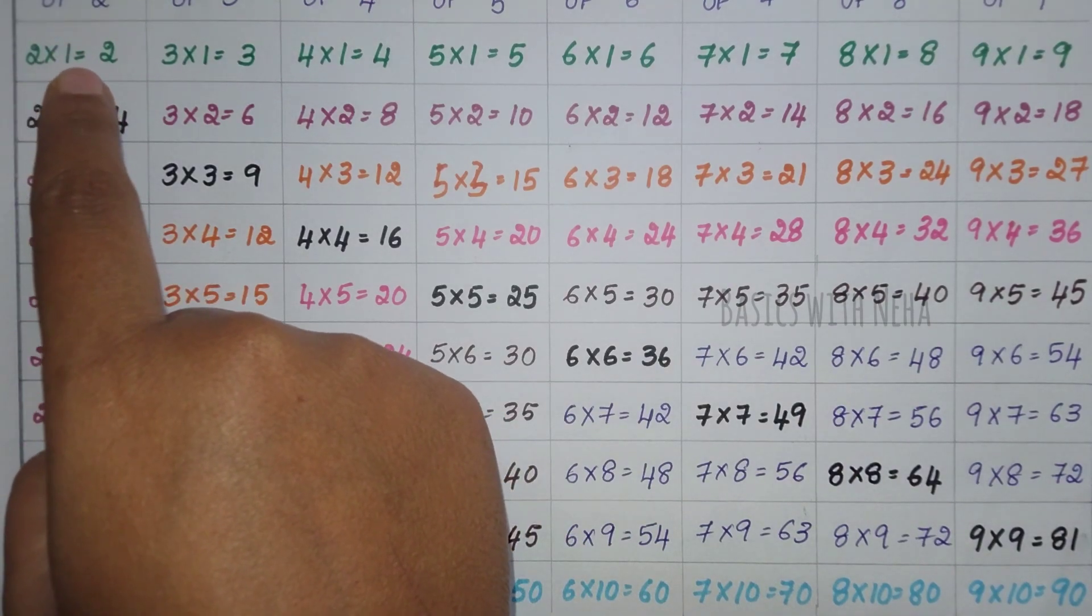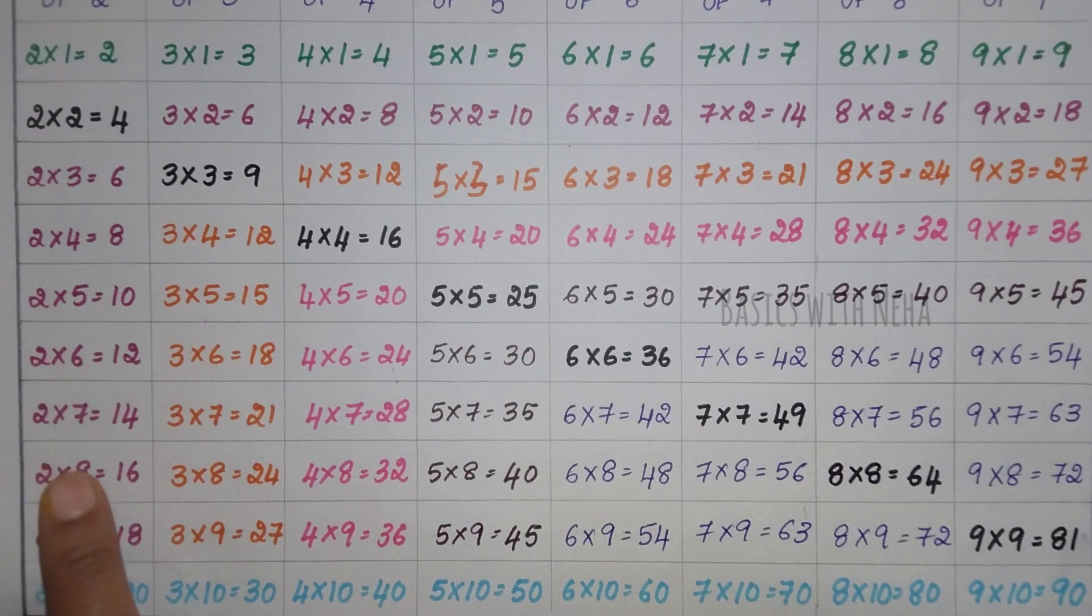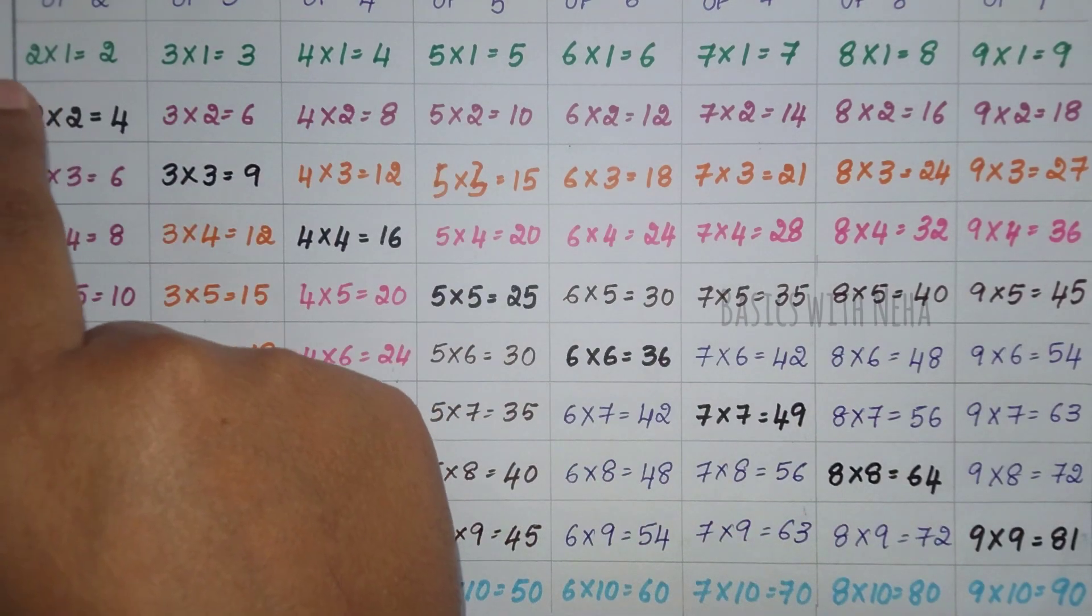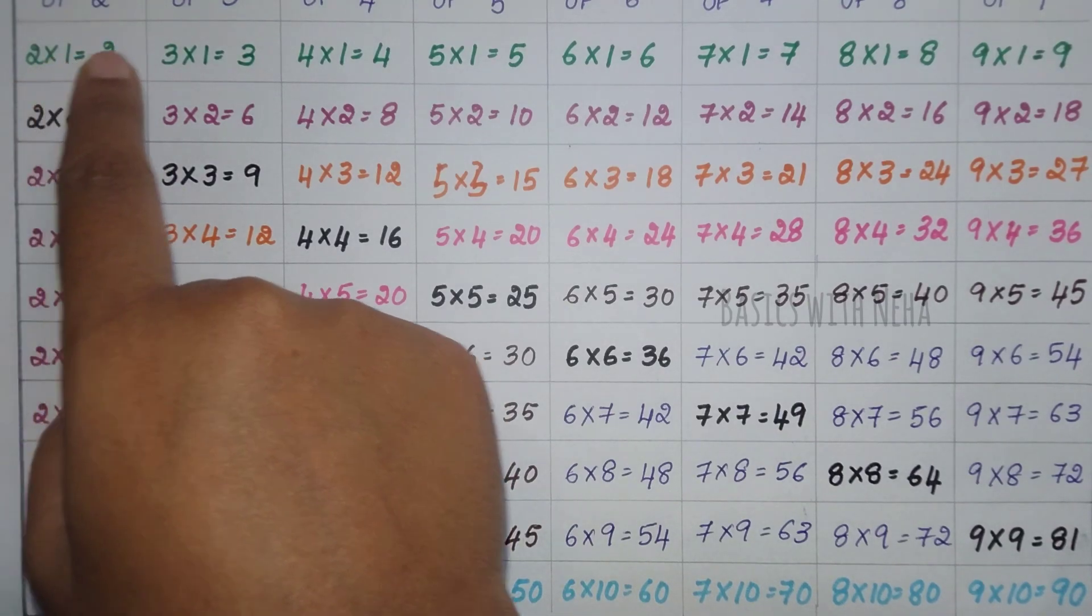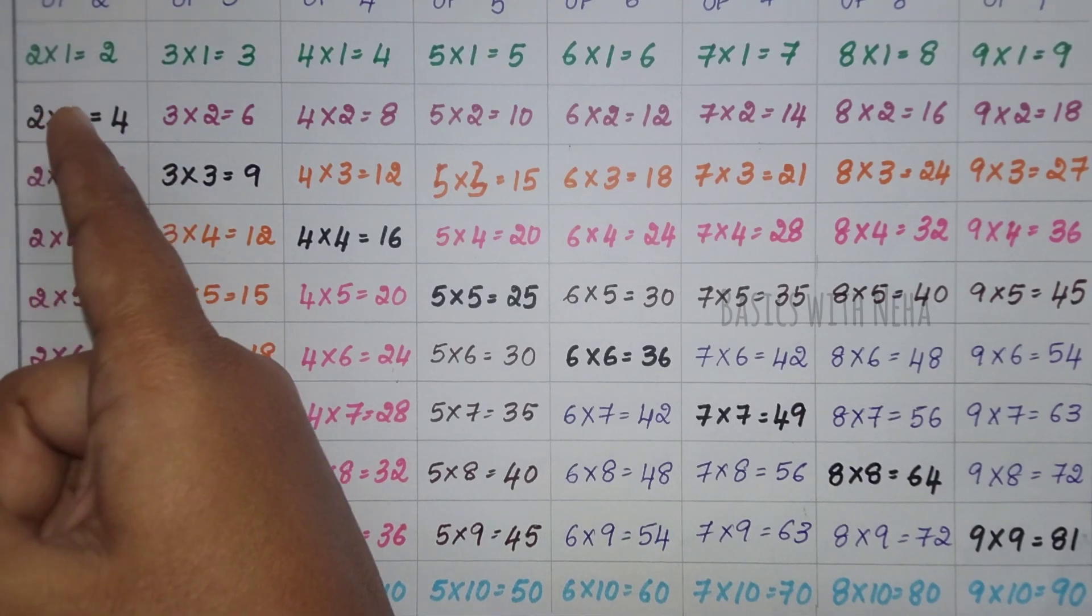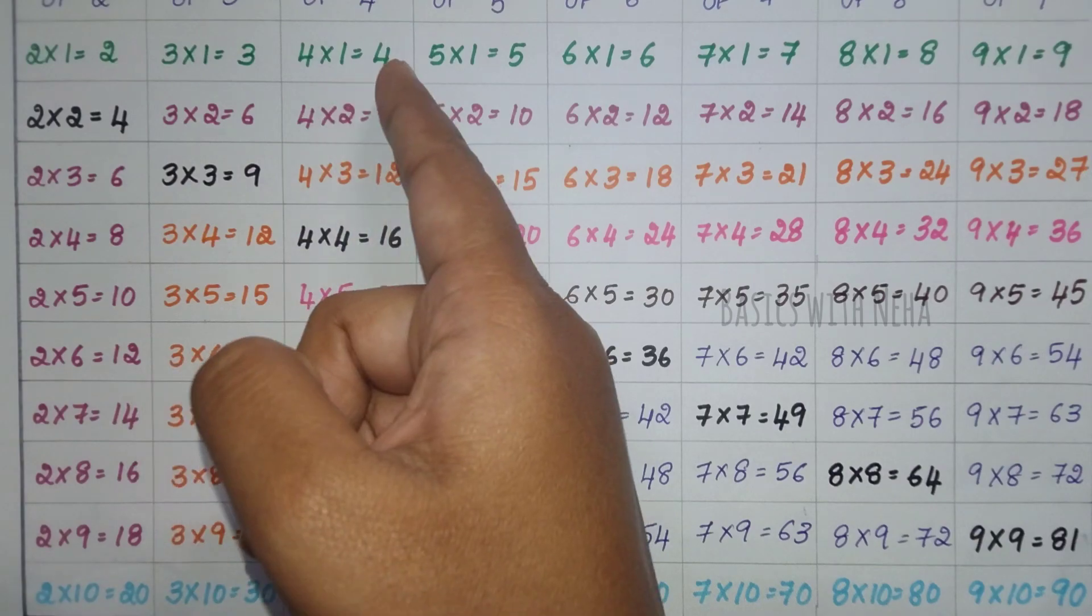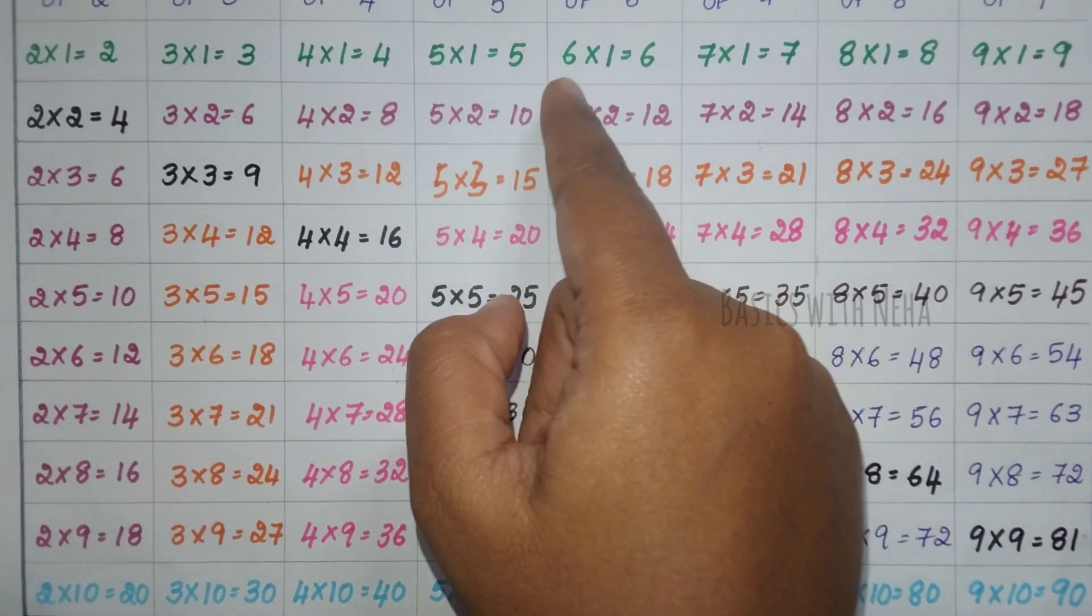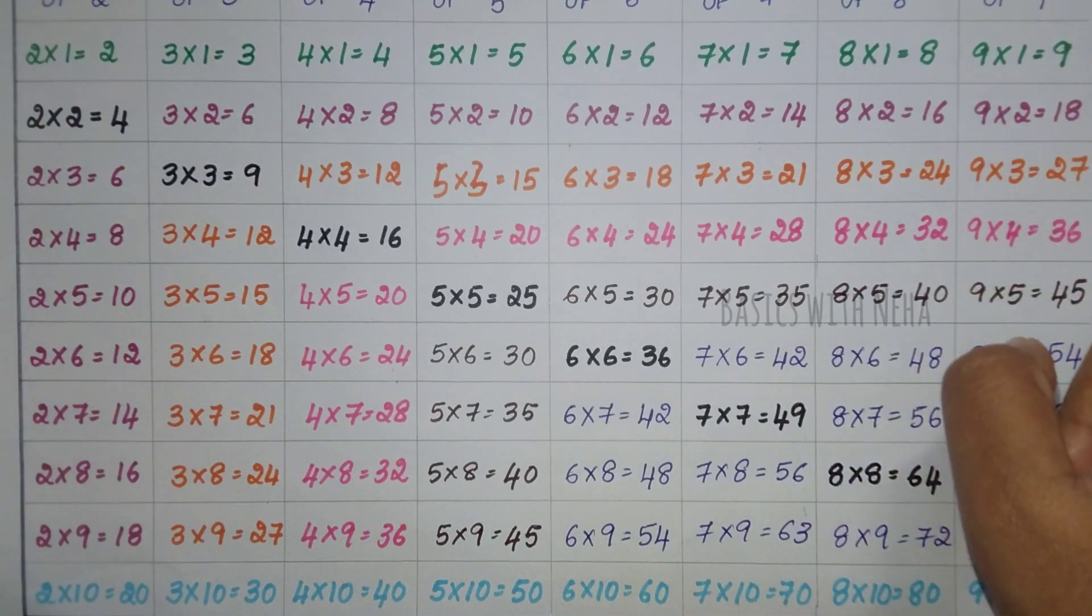That is 1×2 are 2, 1×3s are 3, 1×4s are 4, 1×5s are 5, 1×6s are 6. Likewise it goes up to 10×1s are 10, that is 1×10s are 10.